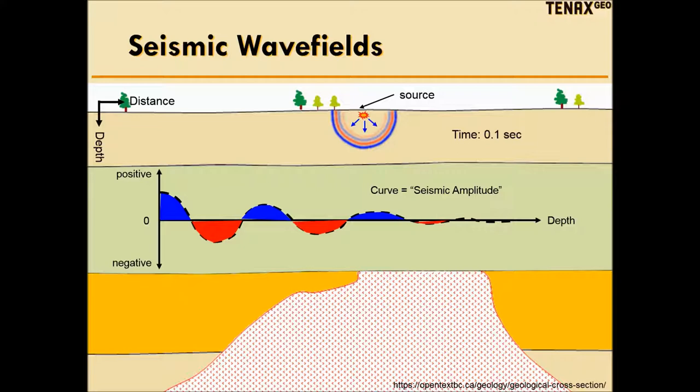We call the color seismic amplitude, but it could represent several different things: pressure, particle displacement, or particle velocity. These details don't matter at this point. All that matters is if we set off an explosion, the colors of the wavefield tell us where the wave is and how strong it is.